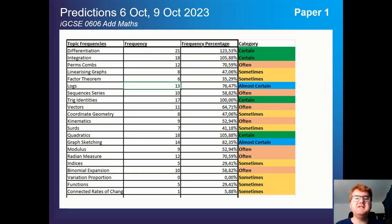You can see all the frequencies over the last 17 papers, exactly what has appeared. Be aware, things like sequence and series still appear almost 60% of the time. Vectors likewise, which I haven't mentioned, is at 65%. So really be careful about some of these often topics because they do come up often. Once you revise those tier one topics, those green and blue topics you see in front of you, make sure you focus on those often topics as well.